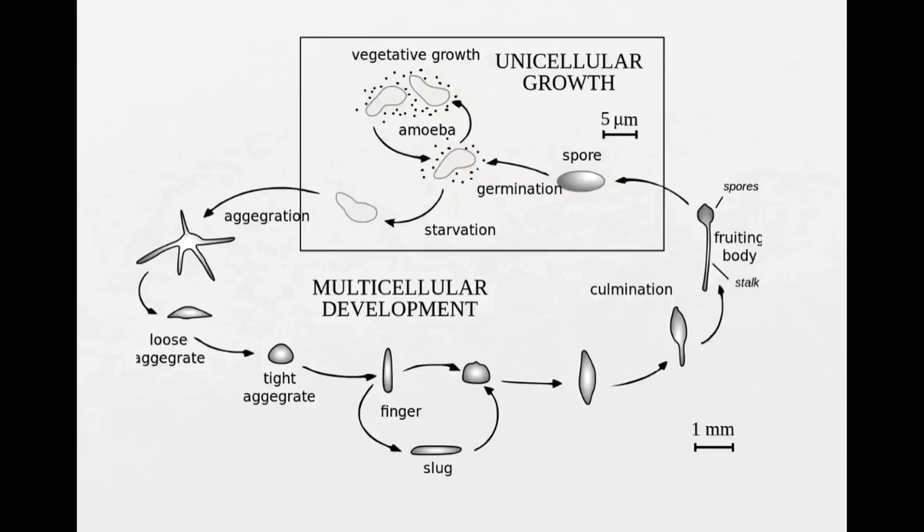However, when the food source runs out, these amoeba start to starve. They're getting really hungry, and that triggers a change in their behavior. What do the amoeba do? They were first solitary organisms, but now they come together from all sides. They aggregate.